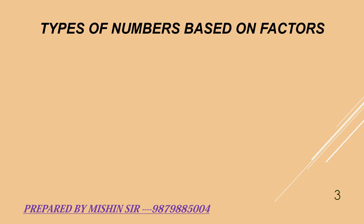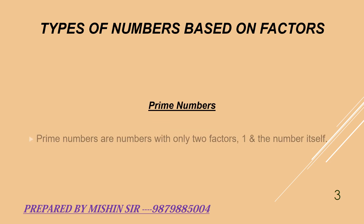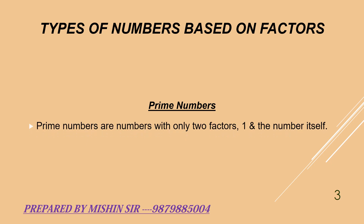The first type is prime numbers. Prime numbers are numbers with only two factors — that is, one and the number itself. For example, 2, 3, 5, 7, and so on.